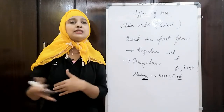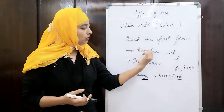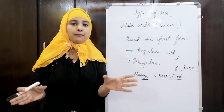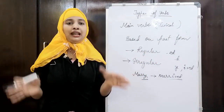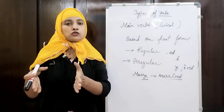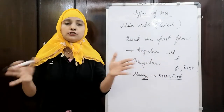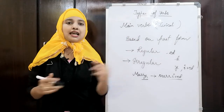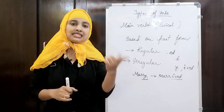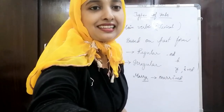We will try to see that in the next class. I hope you have understood what main verbs are. Main verbs are based on object, based on the past form, and based on the action. They have been categorized and explained. We will see with some examples in the next class. Thank you.